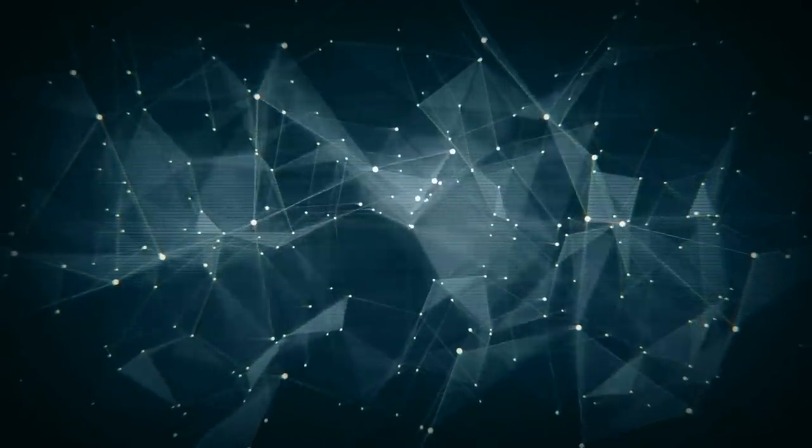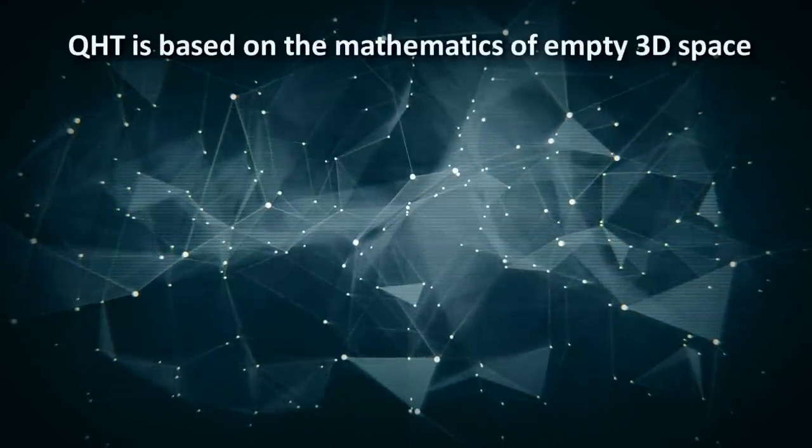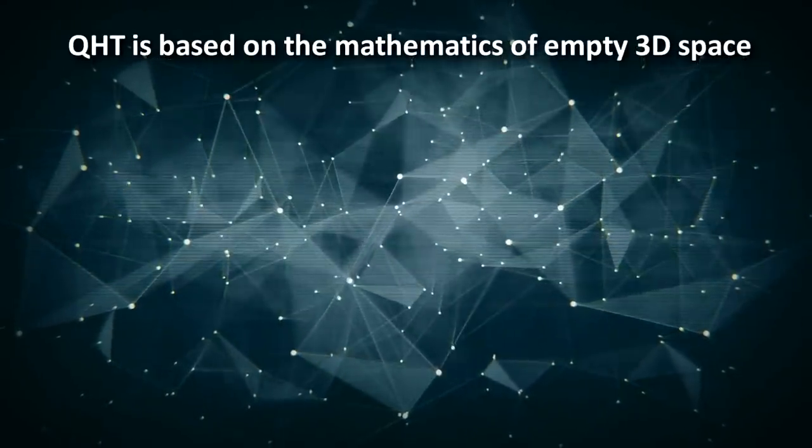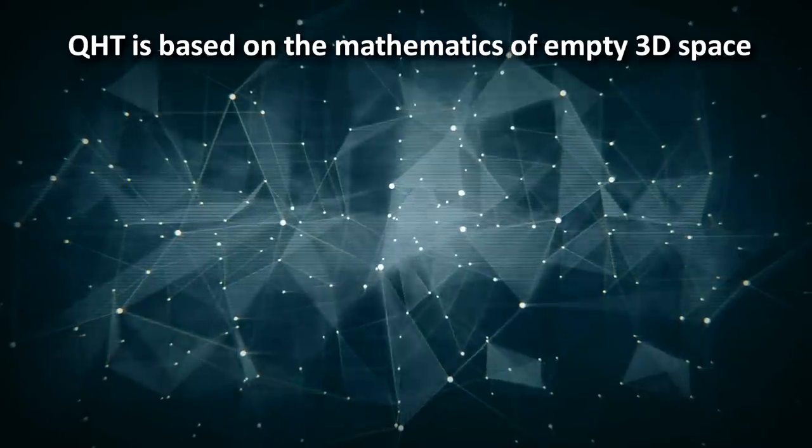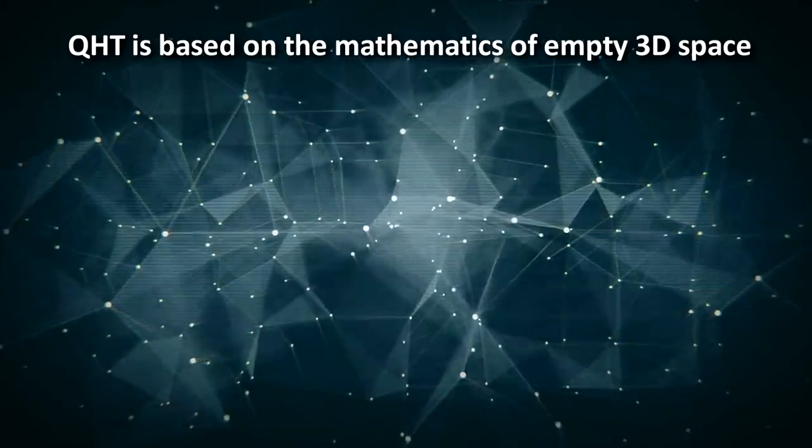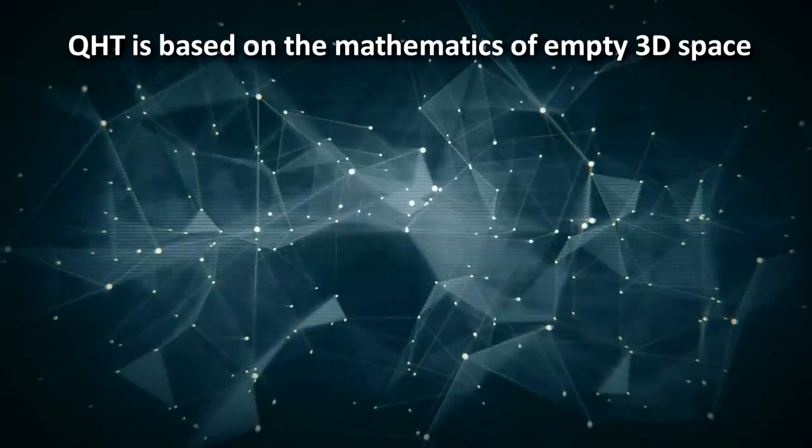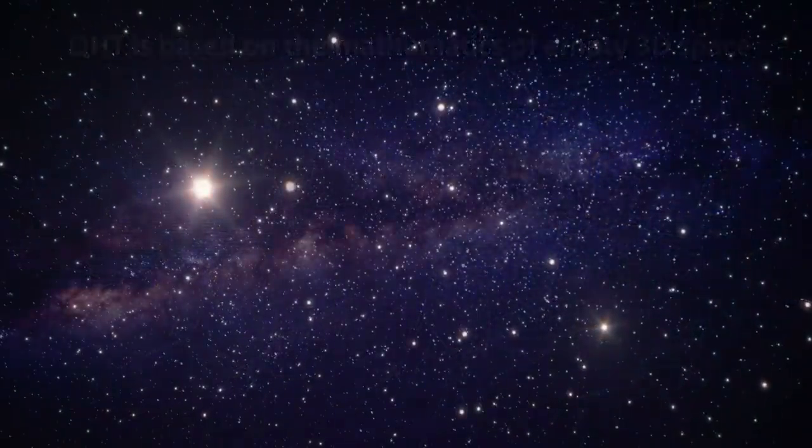Well in quantum holonomy theory, holonomy refers to geometry and curvature, which is based on the mathematics of empty three-dimensional space. Just space, not even time, and no stuff, no things within that space, just empty space. So let's look at that.